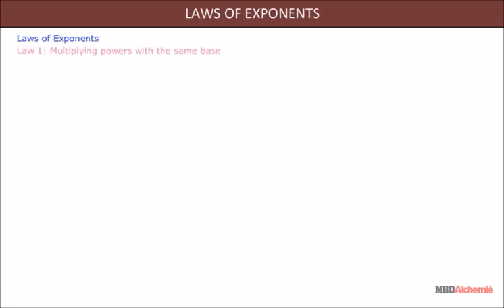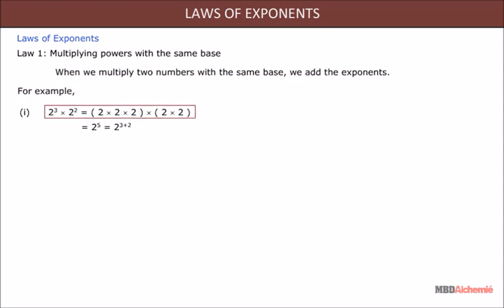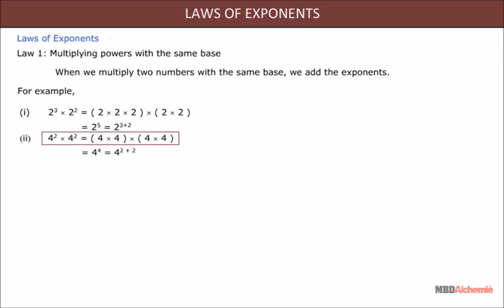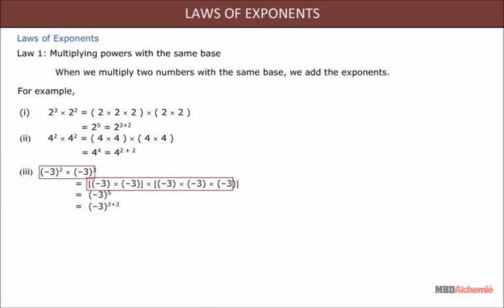Law 1: Multiplying powers with the same base. When we multiply two numbers with the same base, we add the exponents. For example: 2³ × 2² = 2 × 2 × 2 × 2 × 2 = 2⁵ = 2^(3+2). Also, 4² × 4² = 4 × 4 × 4 × 4 = 4⁴ = 4^(2+2). Similarly, (−3)² × (−3)³ = (−3)⁵ = (−3)^(2+3).